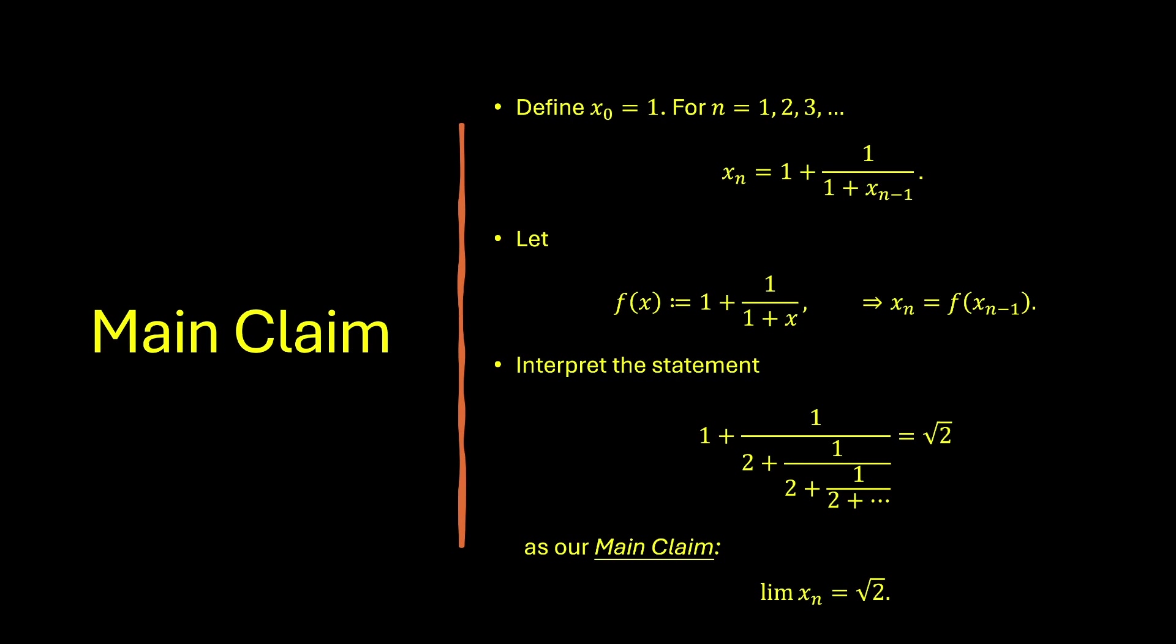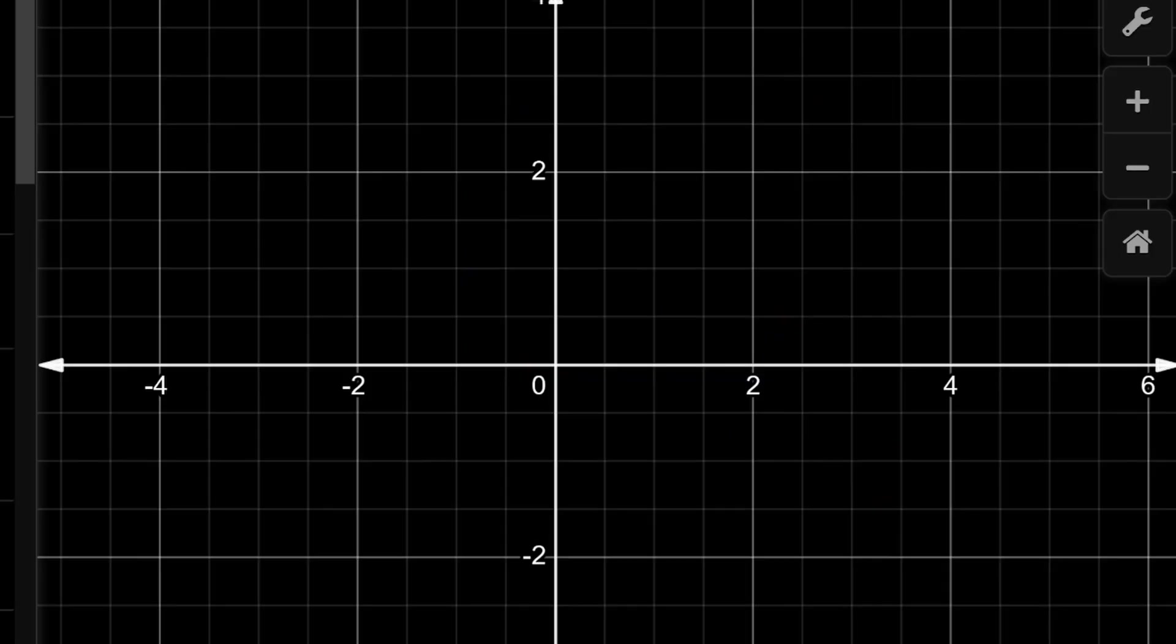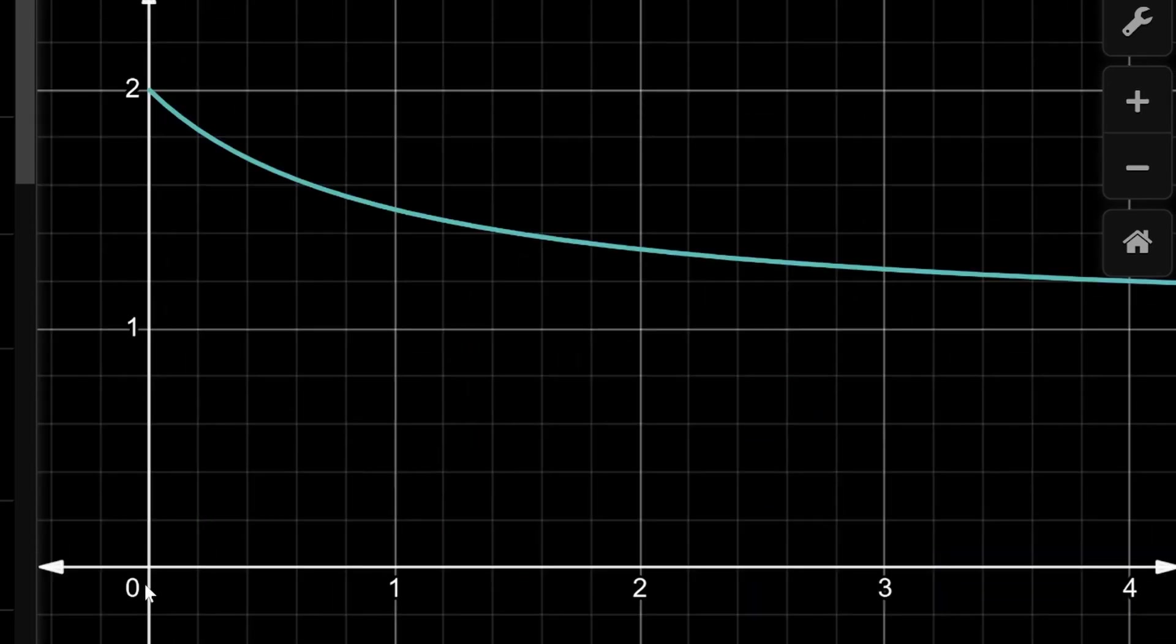To prove this main claim, we'll need some fairly abstract machinery. But first, let's do some visualization. In particular, graphically, how this sequence xn is generated. So first, graph the function f of x. Notice that when x is positive, f of x is also positive. And since the initial value of our sequence is 1, we know that the sequence xn is always going to be positive. So we can restrict ourselves in the first quadrant. Now we're going to add the line y equals to x on the graph.